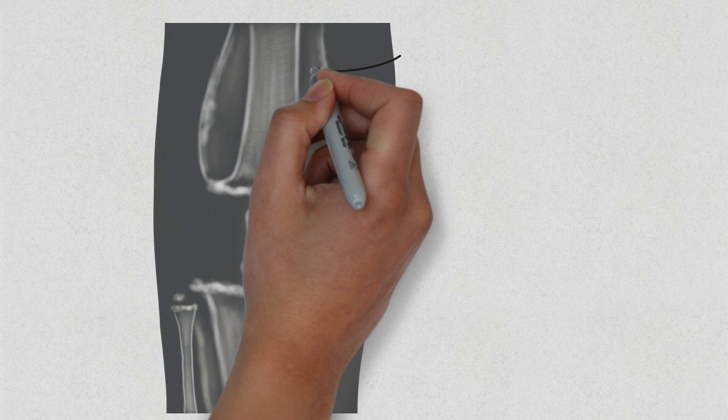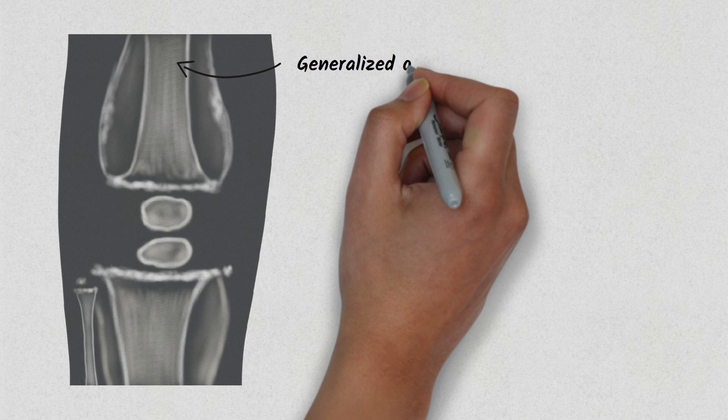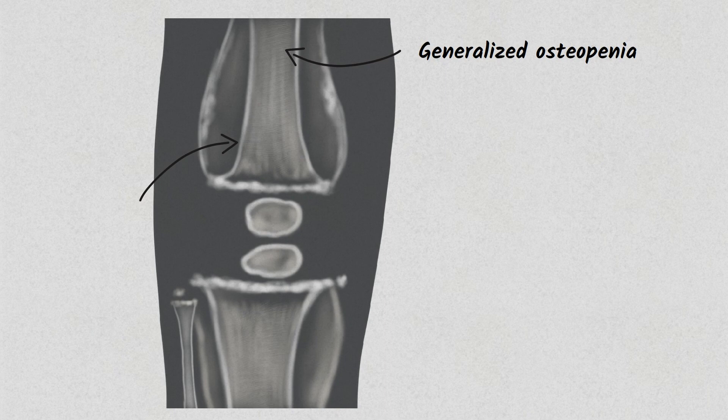First thing you can see here is generalized osteopenia with ground glass-like appearance. Next, you can see cortical thinning which is called pencil point cortex.